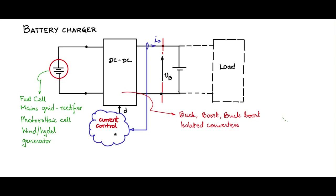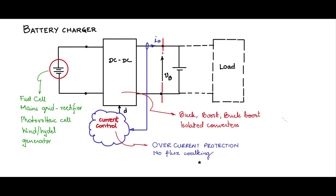Some advantages of current control include inherent overcurrent protection — cycle-by-cycle instantaneous overcurrent protection can be achieved with current control. Another benefit is that no flux walking will happen; you don't need a flux-walking capacitor. That is a significant benefit because as you go for higher and higher powers, the capacitor can become significantly costly in order to prevent flux walking.